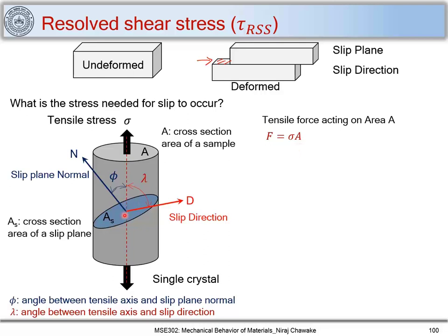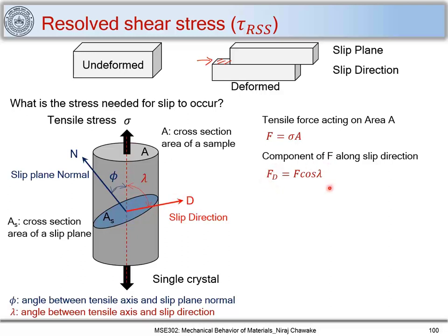We know that slip occurs along the slip direction, so let's find the force component acting along the slip direction. The component of F along the slip direction is F_t = F cos(lambda), since the tensile force makes an angle lambda with the slip direction.